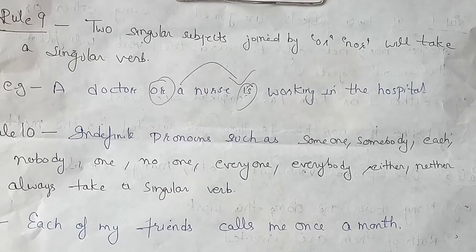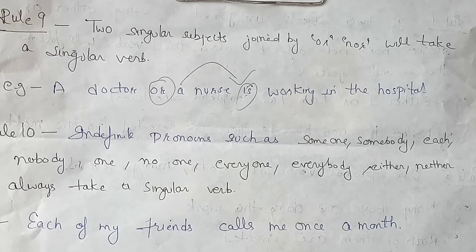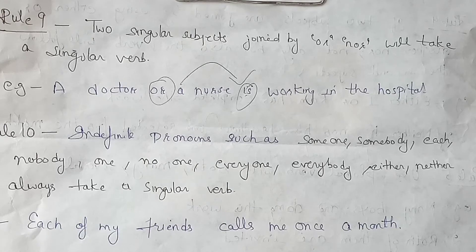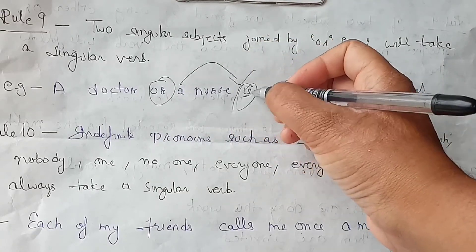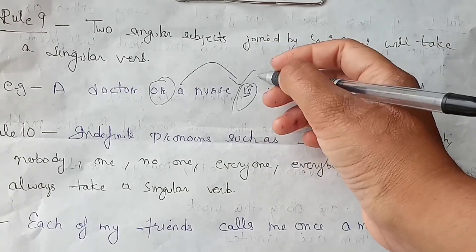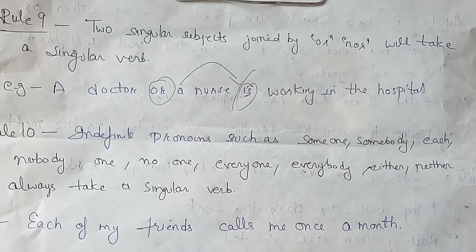Rule number nine: two singular subjects joined by 'or' or 'nor' will take a singular verb. So when you join two singular subjects with or/nor, the verb will be singular. For example: 'A doctor or a nurse is working in the hospital.' Here, 'or' is used and the verb 'is' is singular.